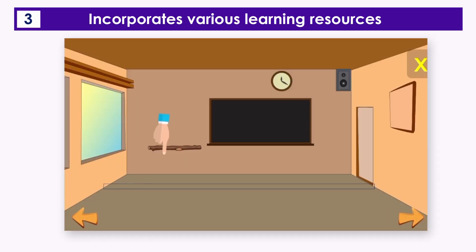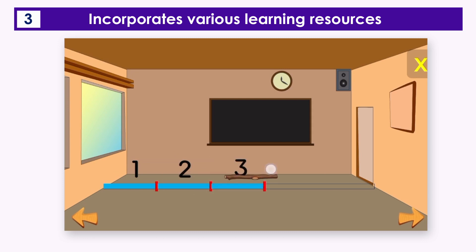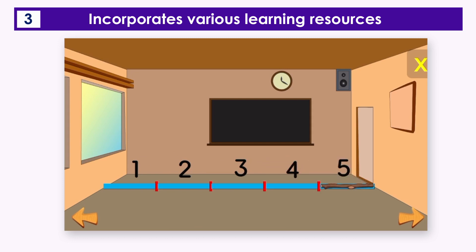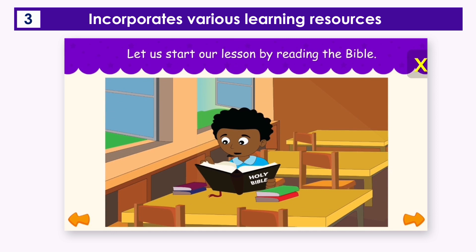Drag the stick to measure the shorter side of the classroom. One, two, three, four, five. Good — the shorter side of the classroom is five sticks. Let us start our lesson by reading the Bible.